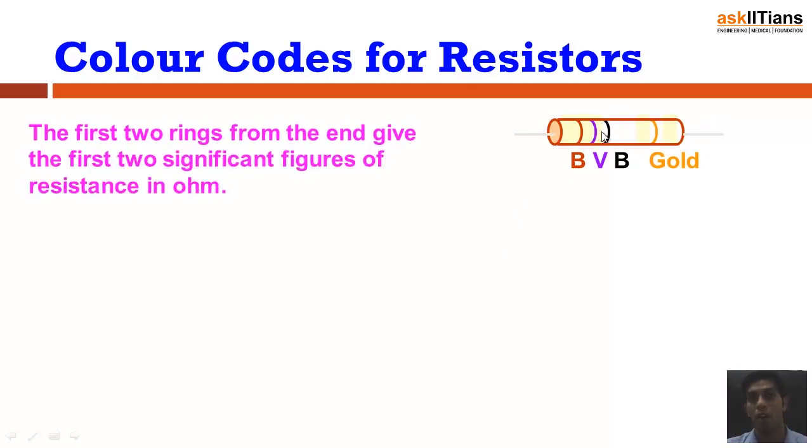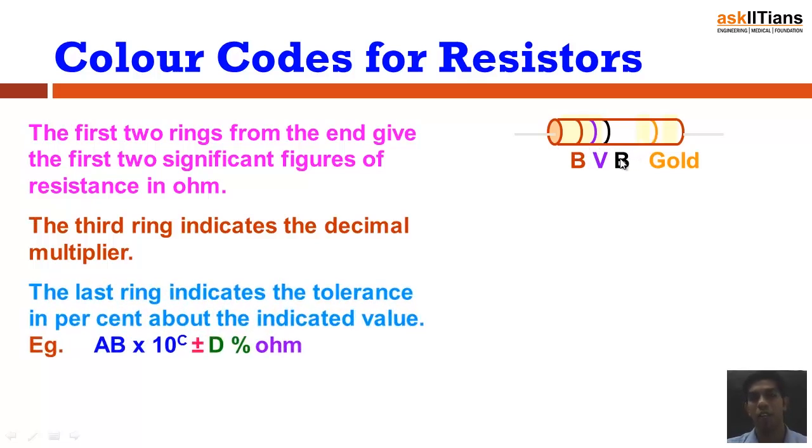The first two rings from the end will give you the first two significant figures of the resistance, and the unit is obviously in ohm. The third ring will actually give you the place of the decimal, at what point should we place the decimal. The fourth ring will actually indicate the tolerance value of this commercial resistance.